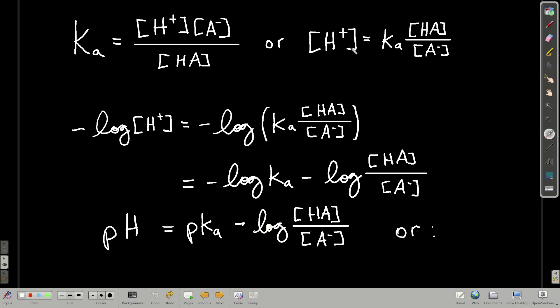Take negative log base 10 of both sides of this equation, using the properties of logs, we get this right here. Negative log of the hydrogen ion concentration is equal to negative log of Ka minus log of the weak acid concentration over its concentration of the conjugate base. But negative log base 10 of the hydrogen ion concentration is pH.